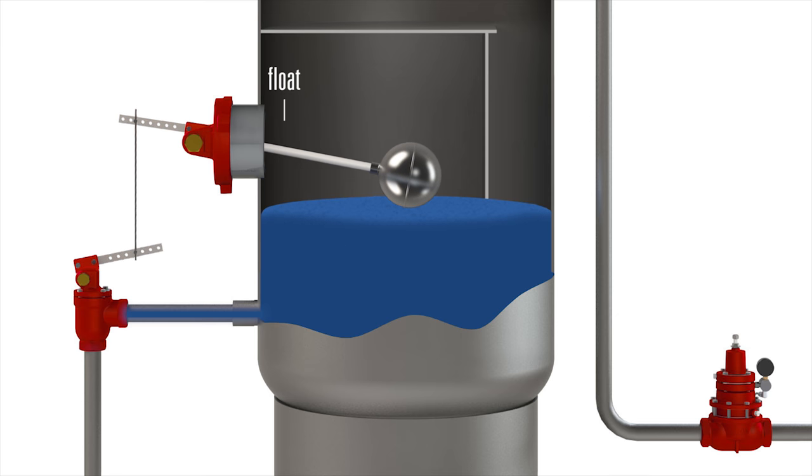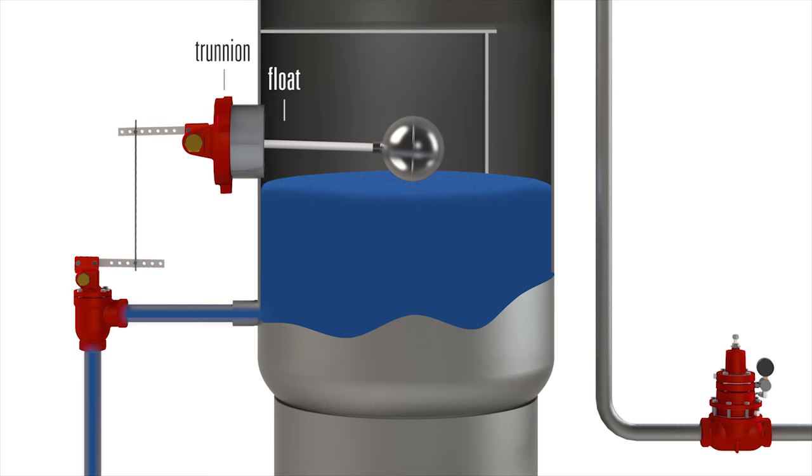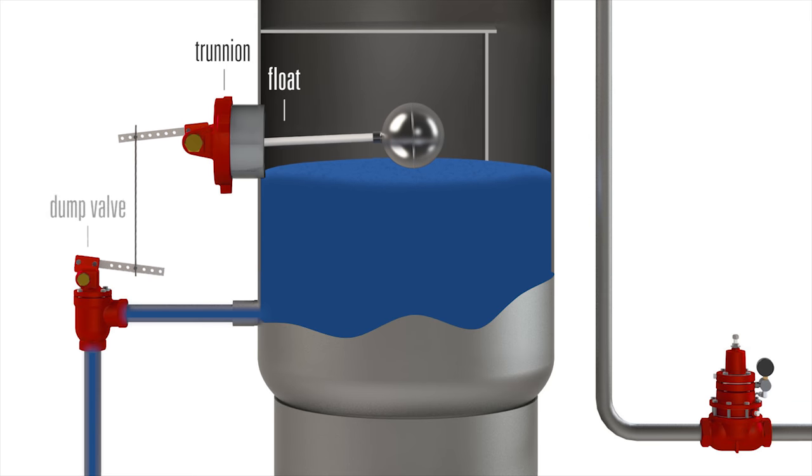A float inside a vessel moves up and down based on the liquid level. This moves the lever on the trunnion assembly, which is mechanically linked to the lever on the valve by a linkage rod.